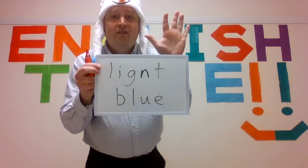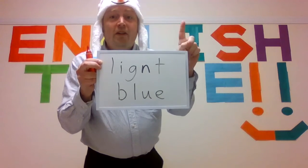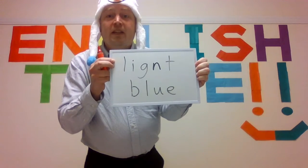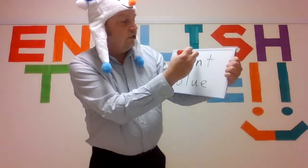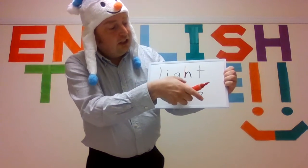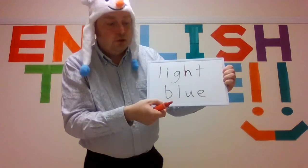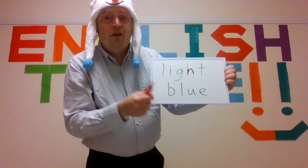Last two — light blue. Five seconds: five, four, three, two, one. Did you find the wrong letter? The wrong letter is N. It should be an H. Let's spell light: L, I, G, H, T. And blue: B, L, U, E — blue. So light blue. Very good.